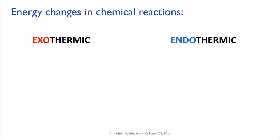Remember, exo means outside, so heat goes to the outside — in these reactions the surroundings get hotter. Endo, or inside, means heat goes to the inside, to the chemicals themselves, and that heat doesn't actually go towards making the chemicals hotter.